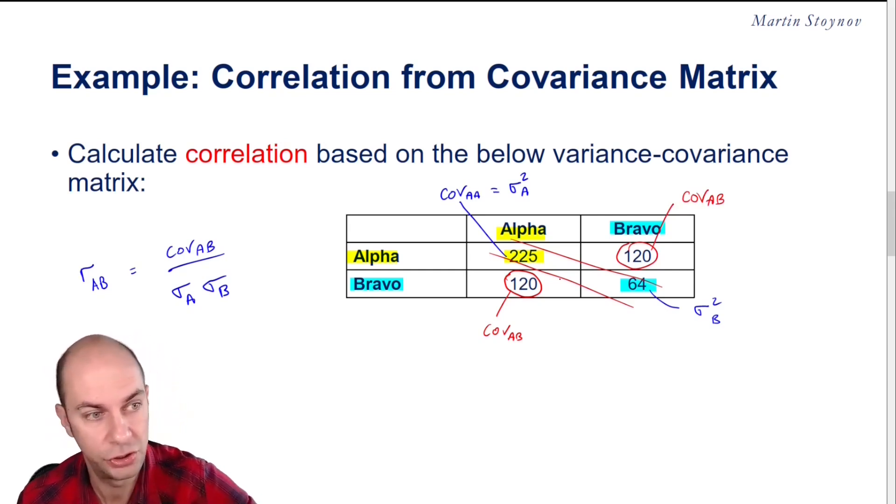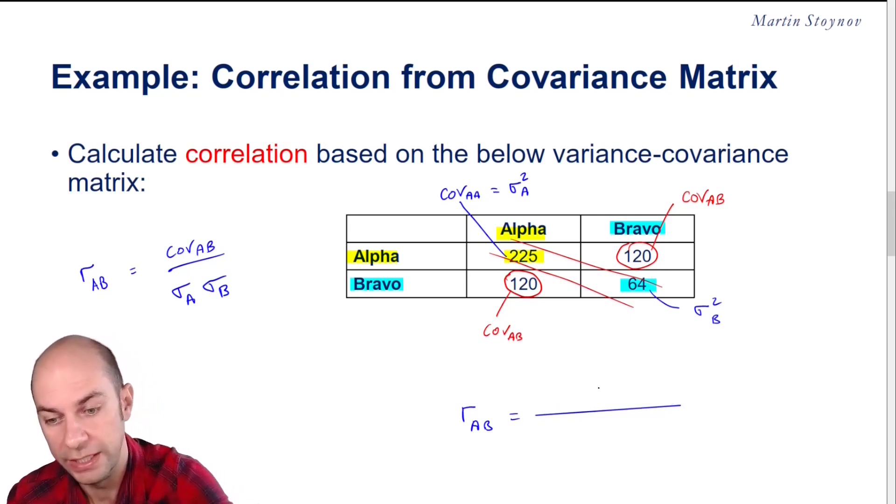So now, armed with all this wonderful knowledge, we are able to finish the problem. What is the correlation A, B? Pause the video if you want to try it on your own. We're going to first of all take the covariance in the numerator, which is 120.